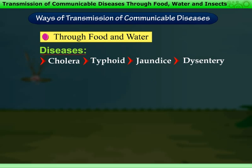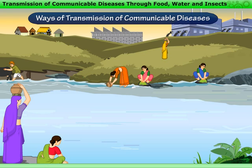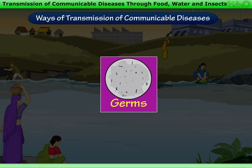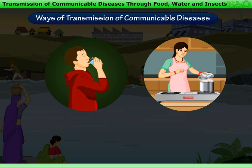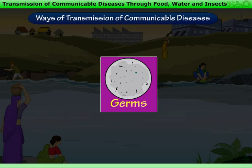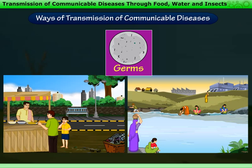The germs of diseases like Cholera, Typhoid, Jaundice, Dysentery, etc. are transmitted through contaminated food and water. When infected people defecate, bathe or wash clothes near rivers or lakes, the germs from their feces, body or clothes get mixed with the water. When such contaminated water is used for drinking and cooking, these germs enter the human body causing diseases. Germs also get into food when it is cooked in dirty utensils or with dirty hands.